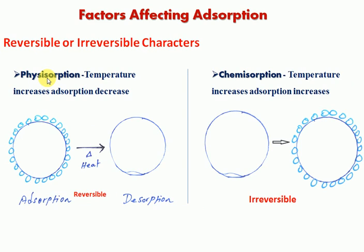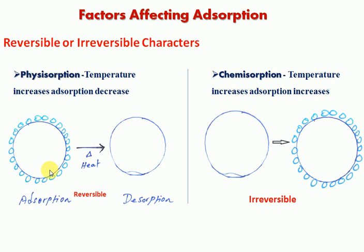Next: reversible or irreversible characters of physisorption and chemisorption. In physisorption, when temperature increases, adsorption decreases. As temperature increases, adsorption is removed because the weak van der Waals forces of attraction are broken. This is desorption. When pressure increases, adsorption increases. Therefore, physisorption is reversible in character.